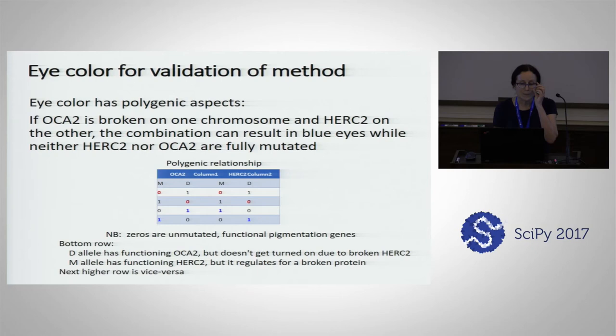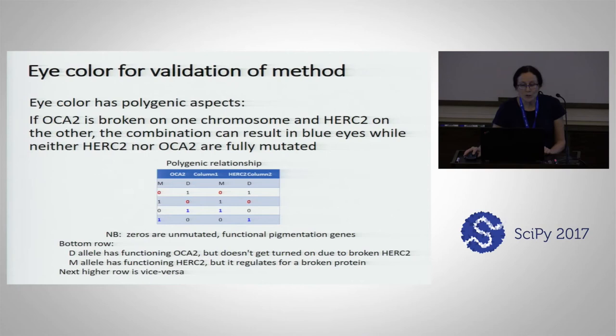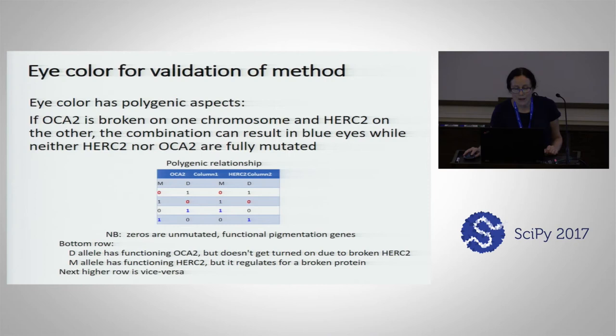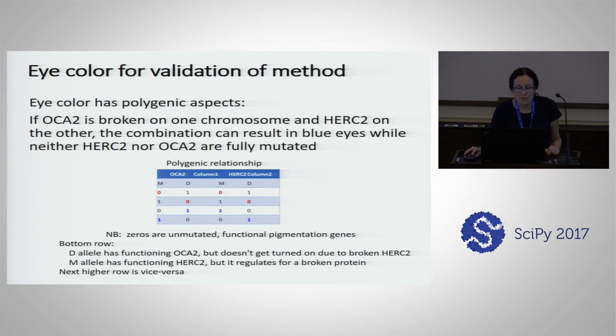We used eye color as a validation method, and it has polygenic aspects which are very interesting. If OCA2 is broken on one chromosome and HERC2 is broken on the other, you can have a blue-eyed person even though nothing is fully mutated. Looking at the possibilities where M represents the mother's genome and D represents what you inherited from your father — if mom's genome gives you a fine version of both HERC2 and OCA2, eye color is recessive blue, so this will give you a nice brown eye color.